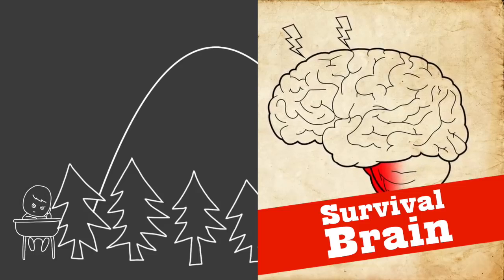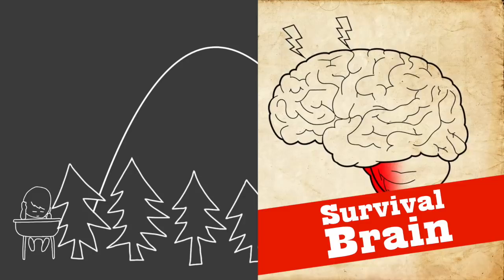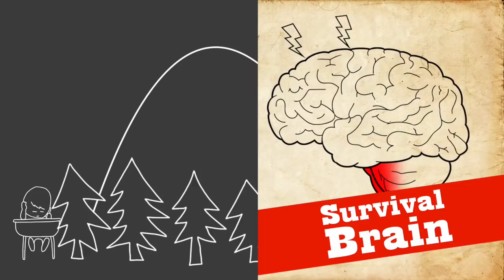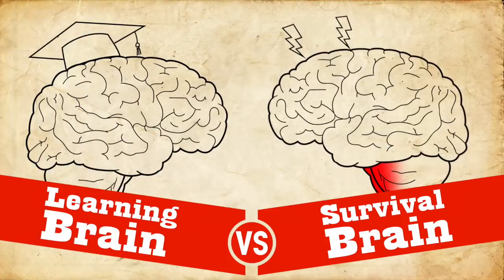And people in survival brain also really don't like making mistakes. And they are afraid of looking stupid too. So students in survival brain don't want to be picked on. They don't want to raise their hand and ask questions and look stupid. And so these people are also filled with doubt about their own ability to learn stuff. And they're afraid that other people can see how stupid they really are.